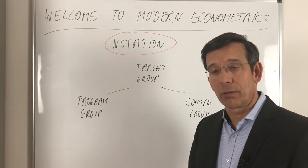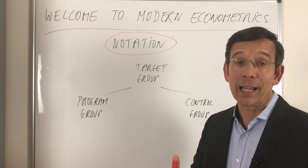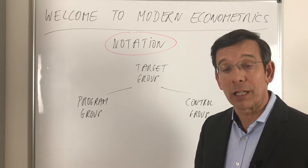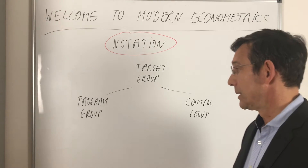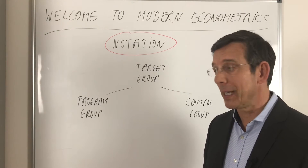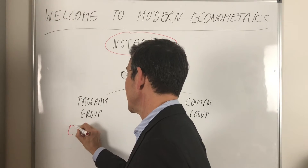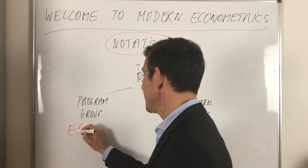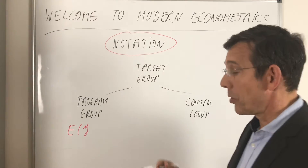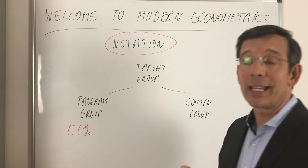Our intellectual and logical problem is that we cannot observe the program group had the program group participants not participated in the program. That's our logical problem. So what we cannot observe is the so-called counterfactual behavior of the program group. And in expected values, the mean outcome of the program group had they not participated.